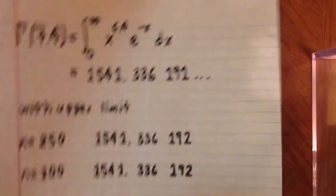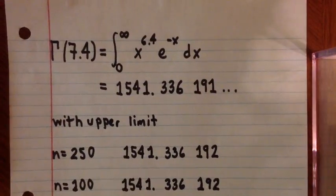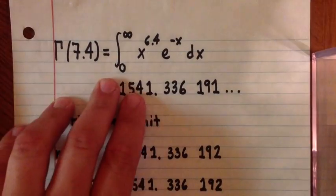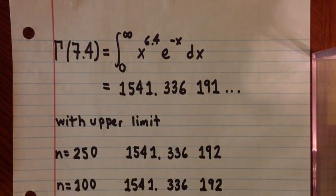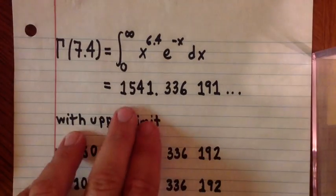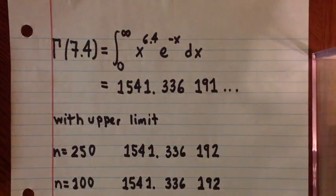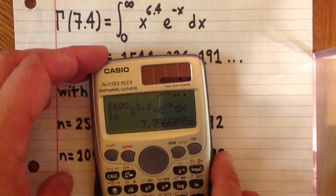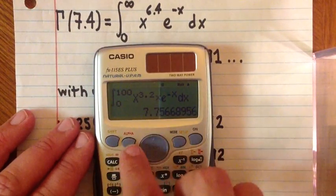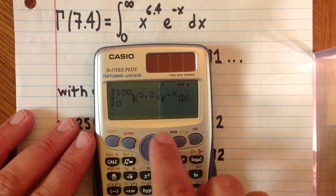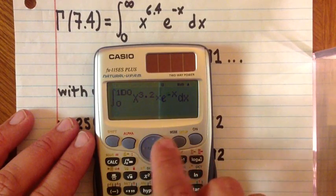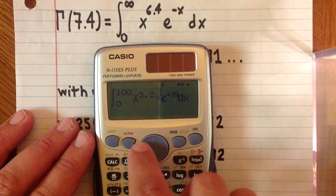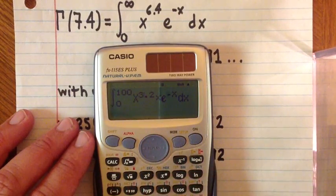Just to give you another example, gamma of 7.4, you'll see is the integral from 0 to infinity of x to the power of 6.4 times e to the negative x dx, and I get 1,541.336191. And I tested this again on the Casio. I can demonstrate that real quick.